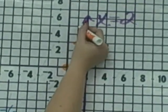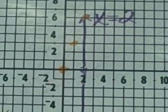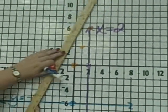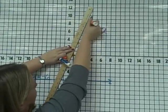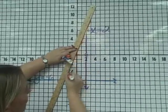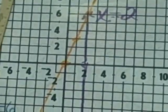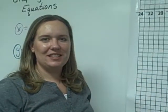We rise 3 again, we run 1. And from this, we can connect our dots and draw the line that represents y equals 3x. And that's how we graph special equations. Thank you.